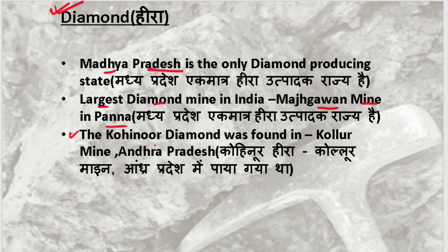If you talk about diamonds, the first name that comes to mind is the Kohinoor diamond. The Kohinoor diamond was found from the Kollur mine, which is in Andhra Pradesh. This concludes the metals and non-metals chapter.